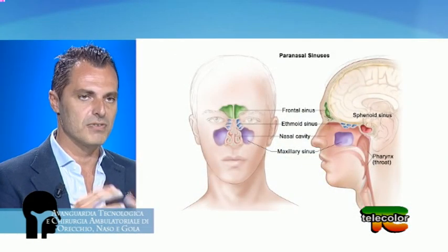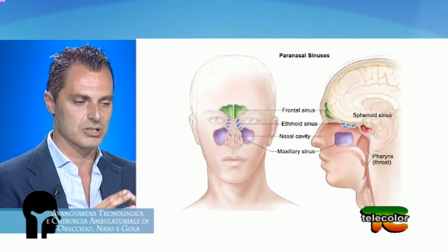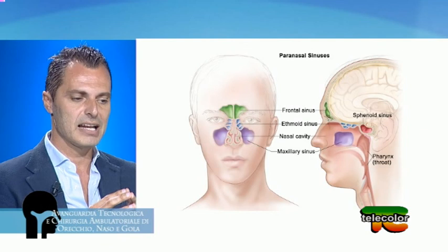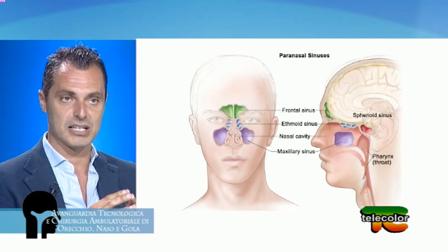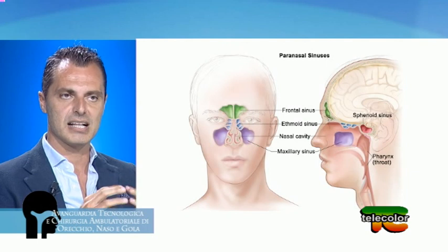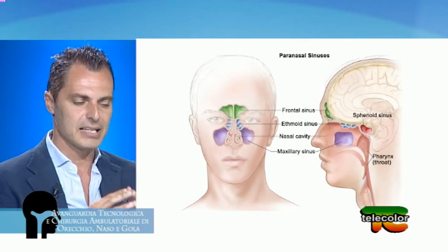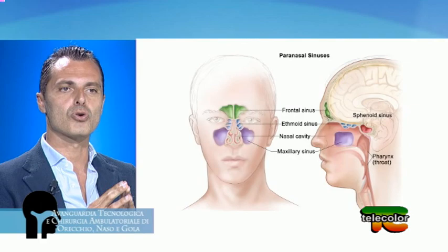L'appartamento si sviluppa nei seni mascellari, due cavità poste al di sotto degli zigomi, nei seni frontali, le due cavità al di sopra delle sopracciglia, e nel labirinto etmoidale, una serie di piccolissime cavità ai lati del naso. Se inizio a impedire l'accesso dell'aria dalle narici, sviluppo un processo infiammatorio cronico a carico della mucosa dei seni paranasali, uguale in tutti i pazienti.